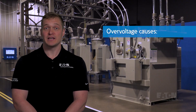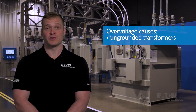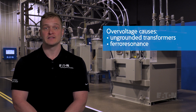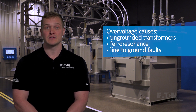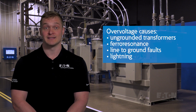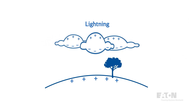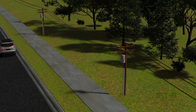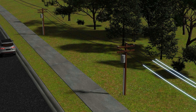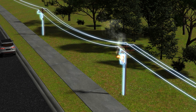While overvoltages may have many causes such as ungrounded transformers, ferroresonance, or line-to-ground faults, by far the most common is lightning. Lightning forms from charge buildup in the clouds. If enough charge builds up, it can overcome the air gap between the cloud and earth and strike in the form of lightning. Electrically, these strikes act as a current source that transfers the buildup charge, inducing an overvoltage that propagates outward from the point of contact.